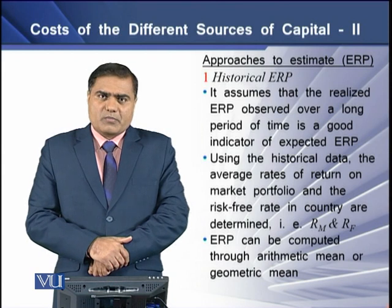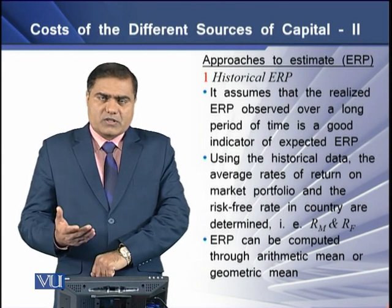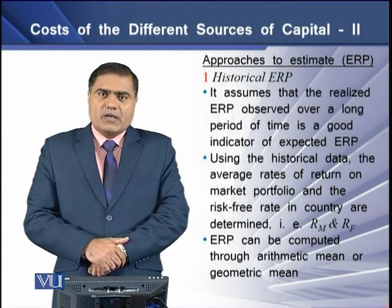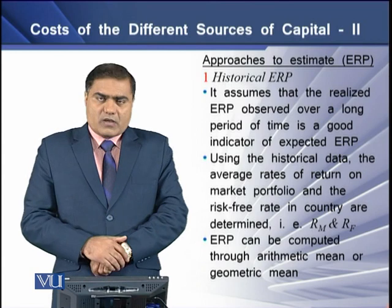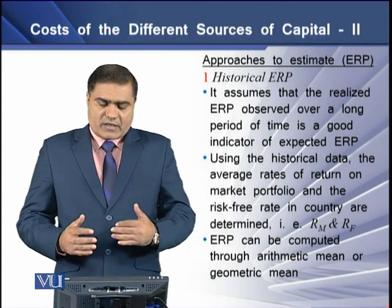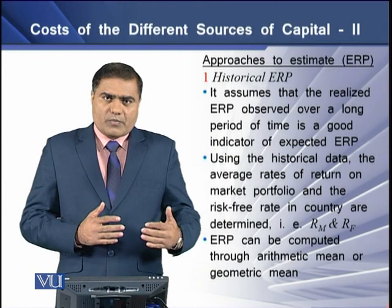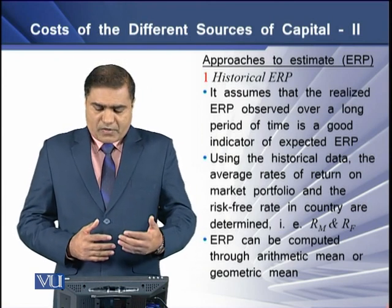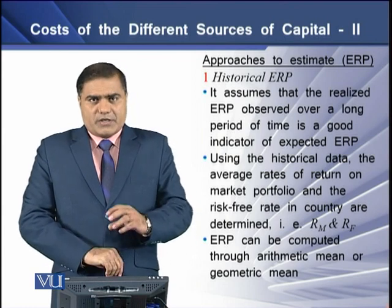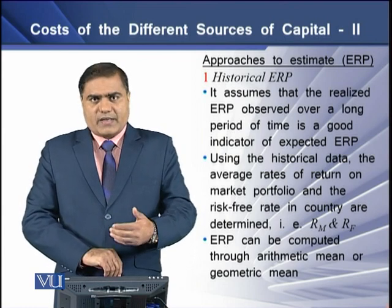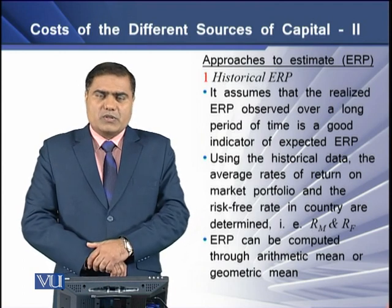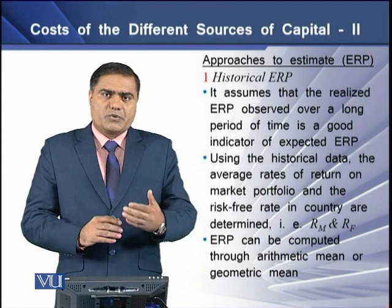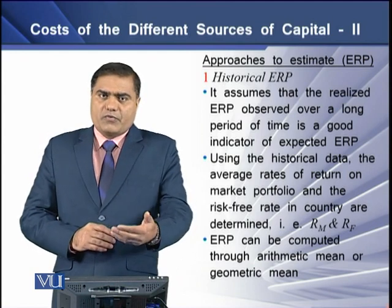To determine ERP, or equity risk premium, there are certain approaches. The first approach is the historical ERP. In historical ERP, it is assumed that the realized ERP observed over a longer period of time, or the historical risk premium, is a good indicator to determine an expected risk premium. This means we are using historical equity risk premium to compute the expected risk premium for the future.